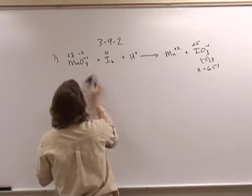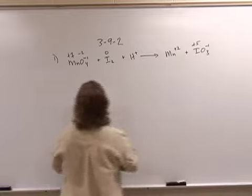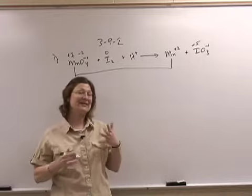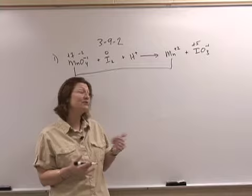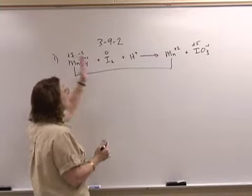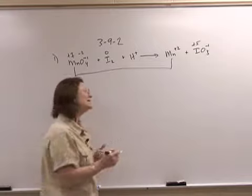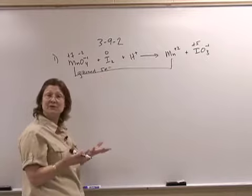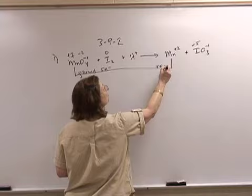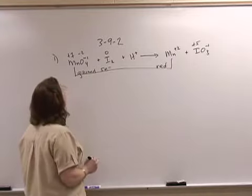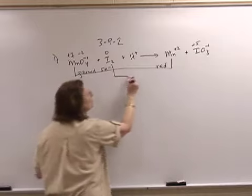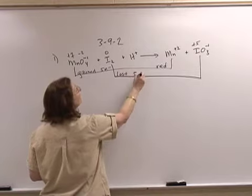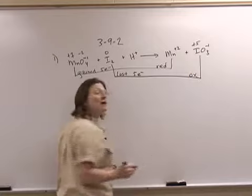What has happened is that the manganese has gone from plus 7 to plus 2. Electrons have a negative charge, so when we have a positive charge that means we lost electrons. We went from losing 7 to only having lost 2, and therefore I gained 5 electrons — reduced. Then iodine has gone from 0 to plus 5, meaning it lost 5 electrons and was oxidized.